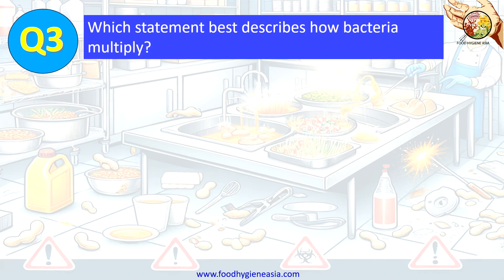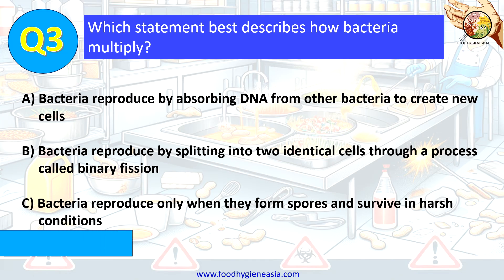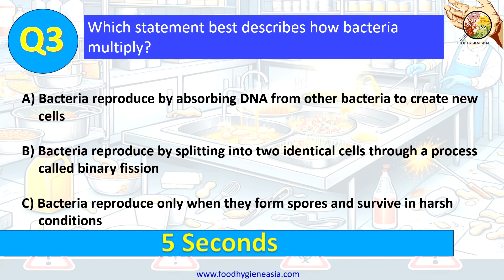Question 3. Which statement best describes how bacteria multiply? A. Bacteria reproduce by absorbing DNA from other bacteria to create new cells. B. Bacteria reproduce by splitting into two identical cells through a process called binary fission. C. Bacteria reproduce only when they form spores and survive in harsh conditions.